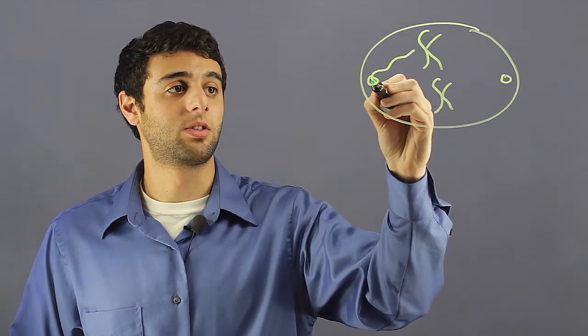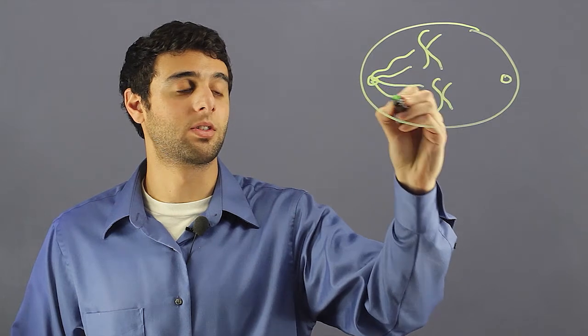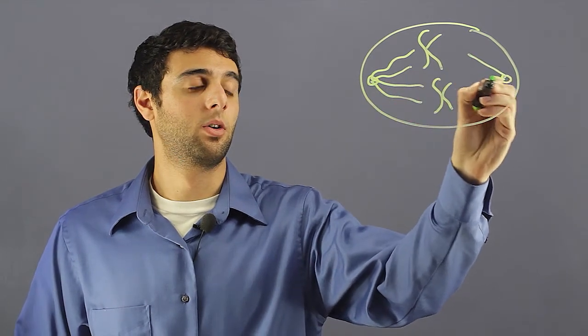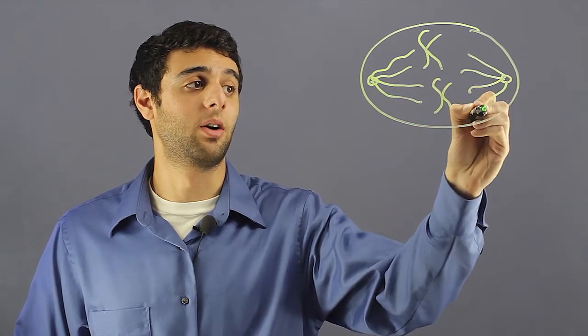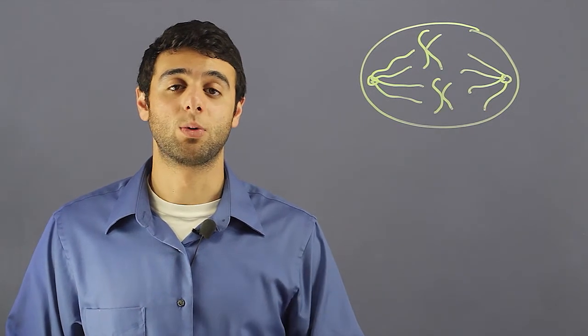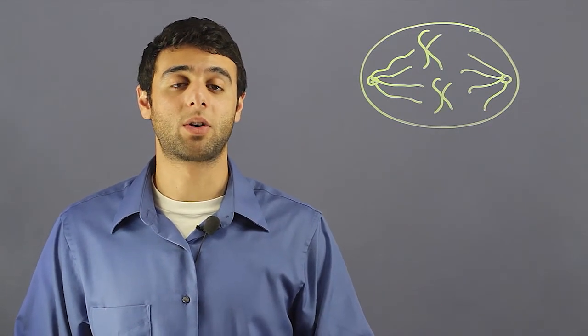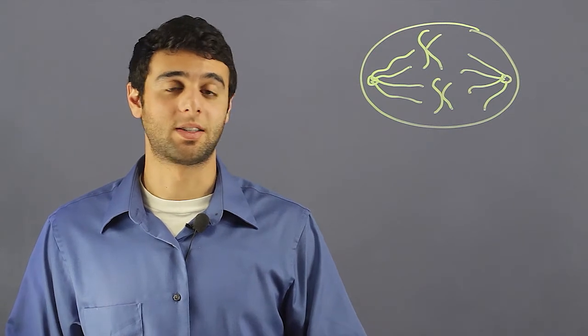From the centrosome, we get microtubules spreading out from it. When the microtubules have spread out, we now have the mitotic spindle, which can then control where the chromosomes move throughout the cell.